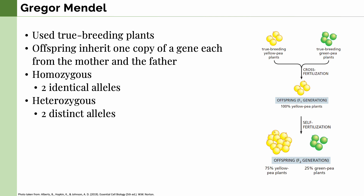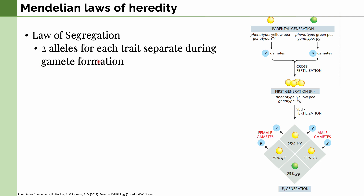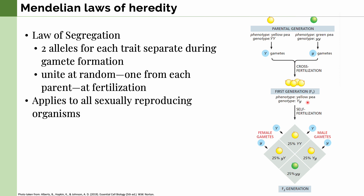During Mendel's experiments, he came up with the laws of heredity. The first Mendelian law is the law of segregation, which states that two alleles for each trait separate during gamete formation and unite at random — one from each parent — at fertilization. This explains his original experiment: one plant was homozygous for the yellow pea allele, the other for the green pea allele, and cross-breeding them yielded a heterozygous F1 generation with one gene for yellow and one for green. This applies to all sexually reproducing organisms.